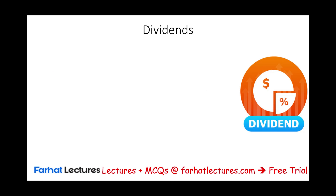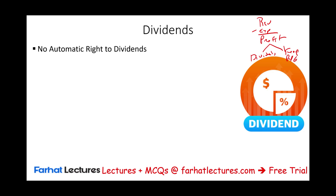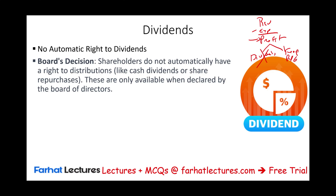Another right you have as a shareholder is the right to participate in dividends. Dividends occur when the company makes a profit and distributes it to shareholders instead of keeping it as retained earnings. However, there is no automatic right to dividends. Simply because you own stocks and the company makes a profit does not mean you will receive a dividend. The board of directors must vote and declare that dividend — if they don't, you receive nothing, and the company keeps the profit to grow.